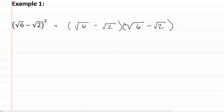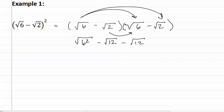Now you use FOIL. This gives you the square root of 6 squared minus the square root of 12 minus the square root of 12 plus the square root of 2 squared.